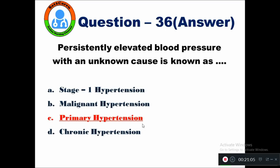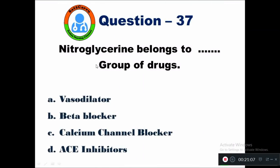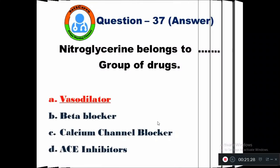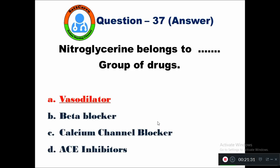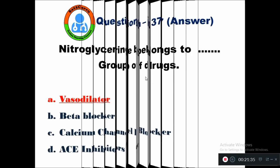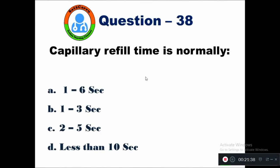Question 37: Nitroglycerin belongs to which group of drugs? Option A vasodilator, B beta blocker, C calcium channel blocker, D ACE inhibitors. Nitroglycerin belongs to the vasodilators group. The best example of a vasodilator is nitroglycerin.